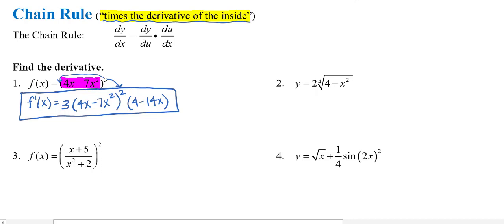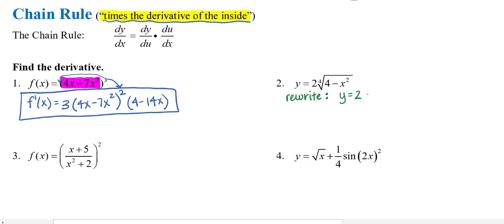We're going to do it again after a quick rewrite in number 2. y equals 2 times the 4th root of 4 minus x squared. Let's do a quick rewrite: y equals 2 times the quantity 4 minus x squared to the 1/4. Remember, it's power over root — 4 minus x squared is all to the 1st over the 4th root.